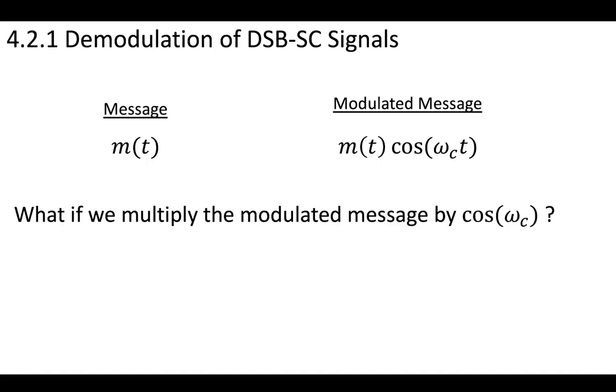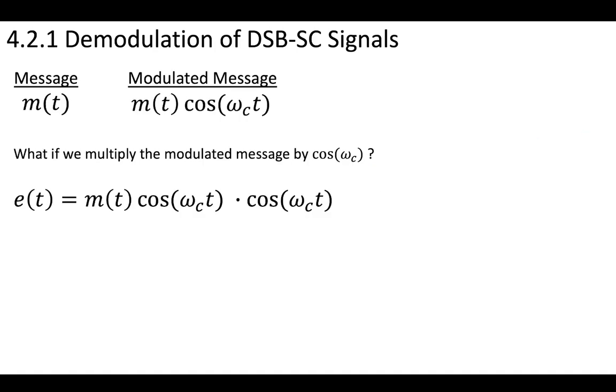Let's start by thinking about what would happen if we took our modulated message and modulated it again. We'll apply a cosine ωt term to this. So we'll modulate the modulated message and see what happens.